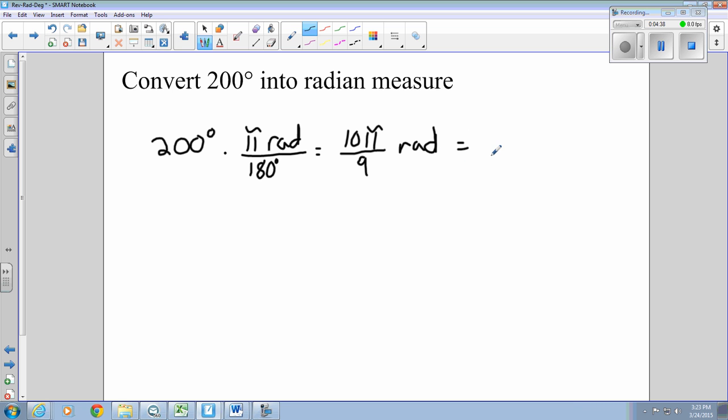So, if we took that out to a decimal number, which we will likely have to do in order to solve some of our physics problems, then this would be 10 times your pi button 3.14 over 9, which equals 3.49 radians. Leave them in three significant digits.